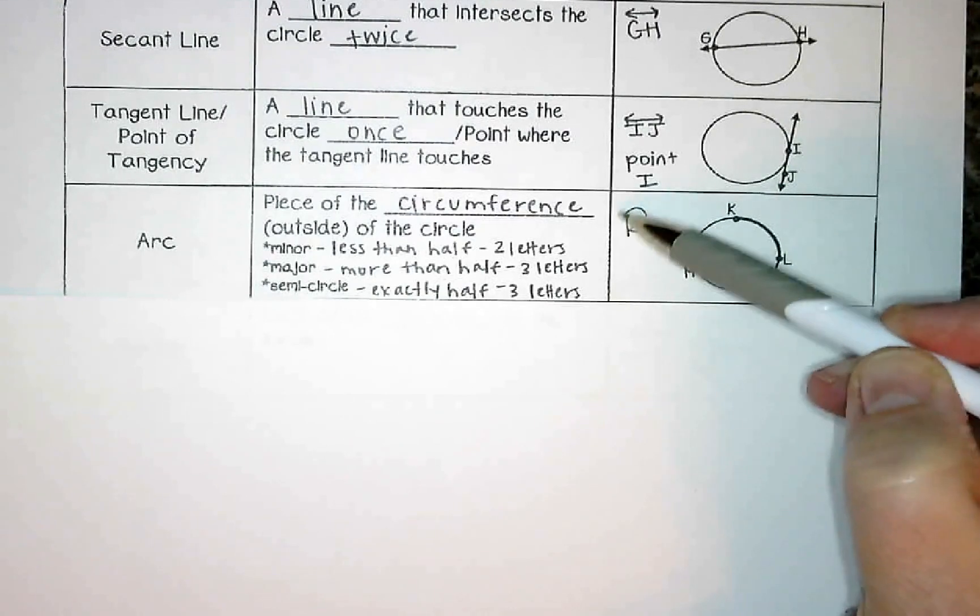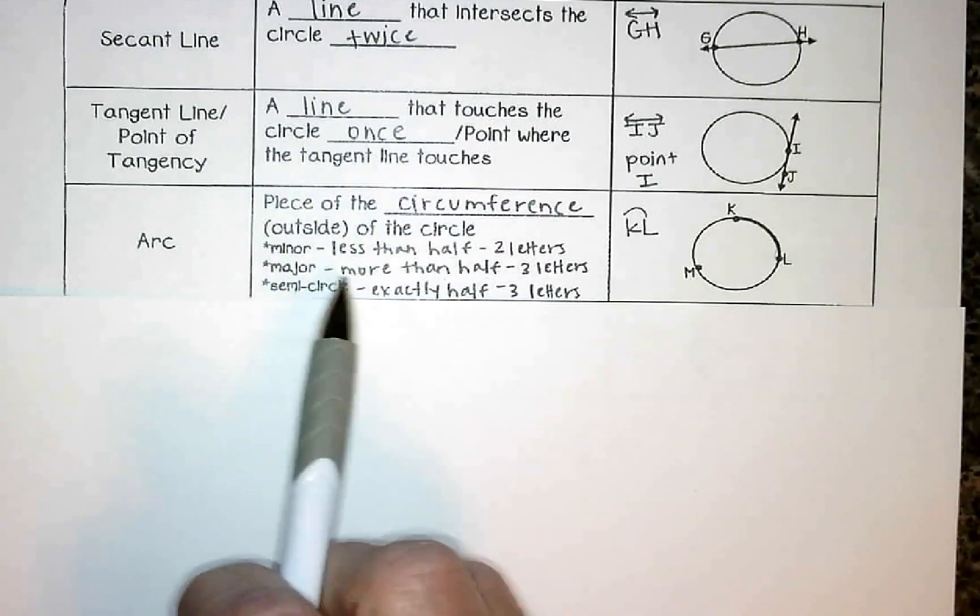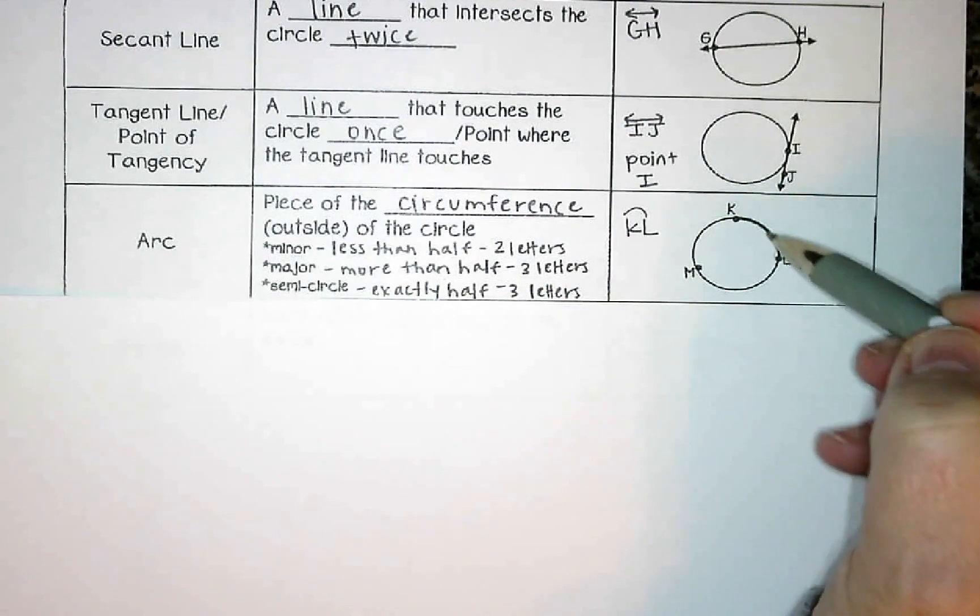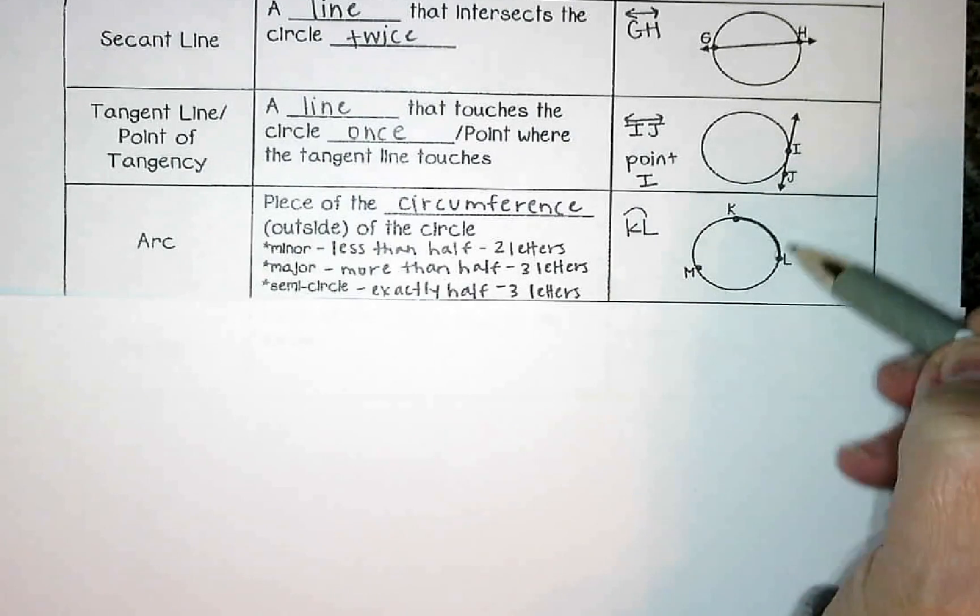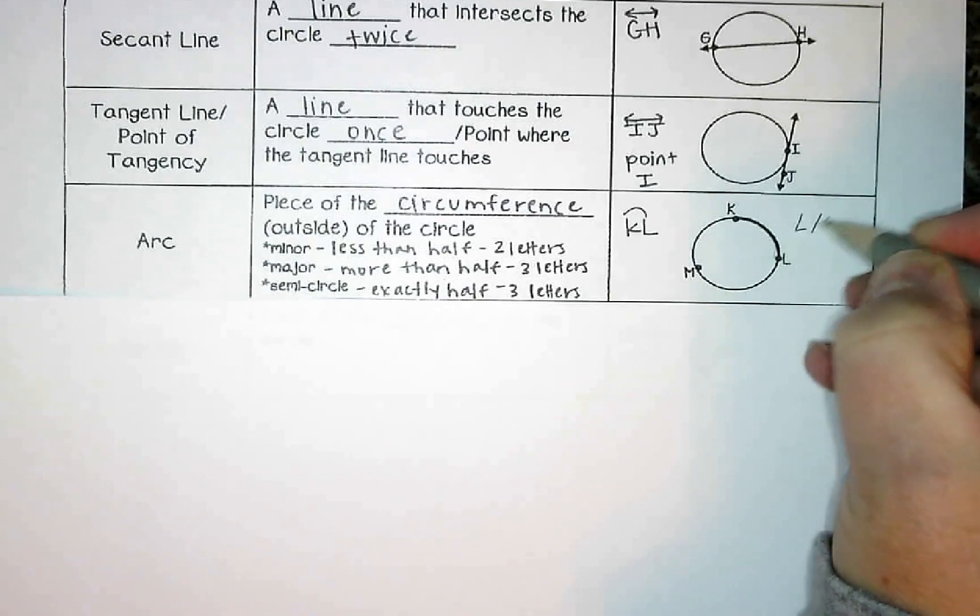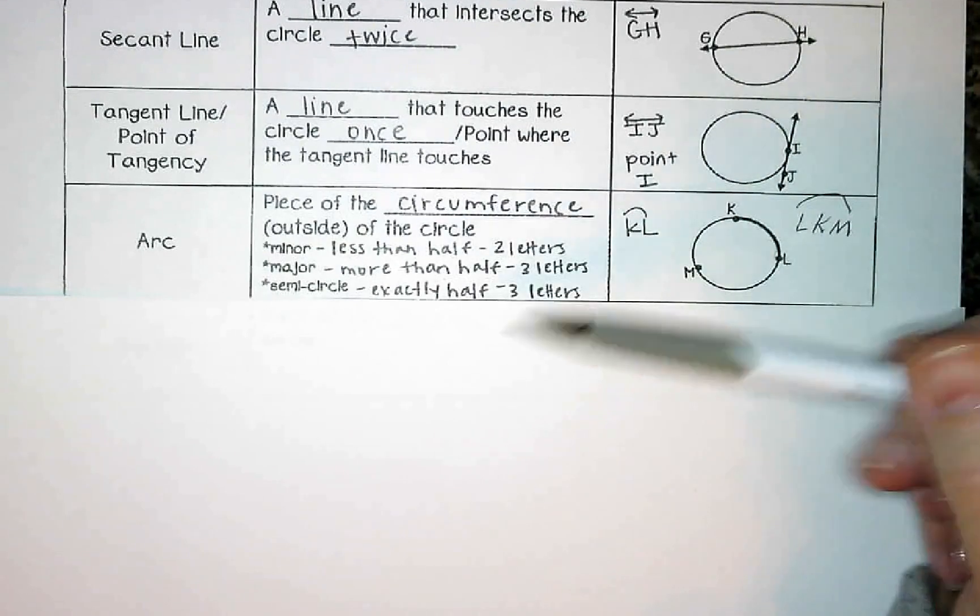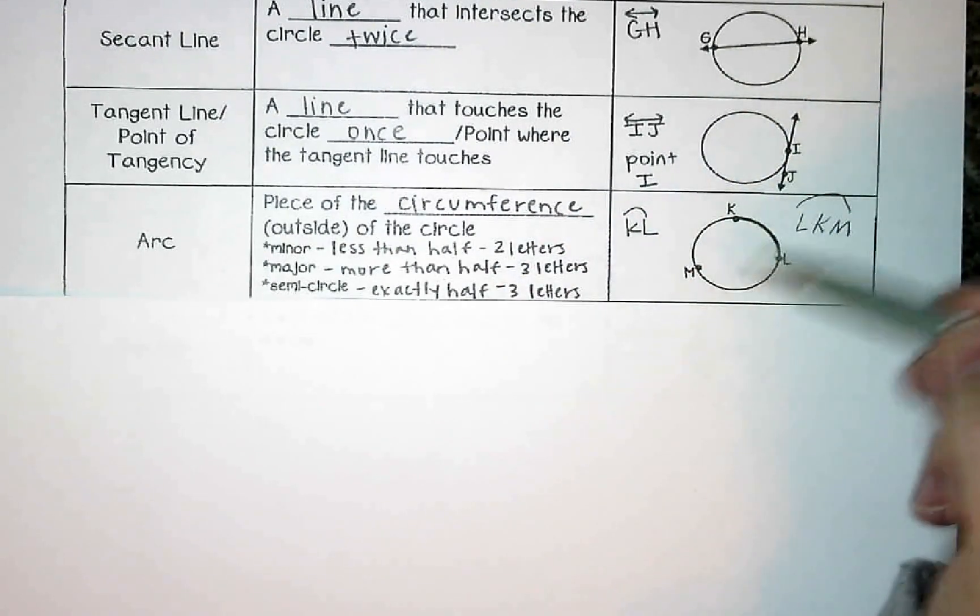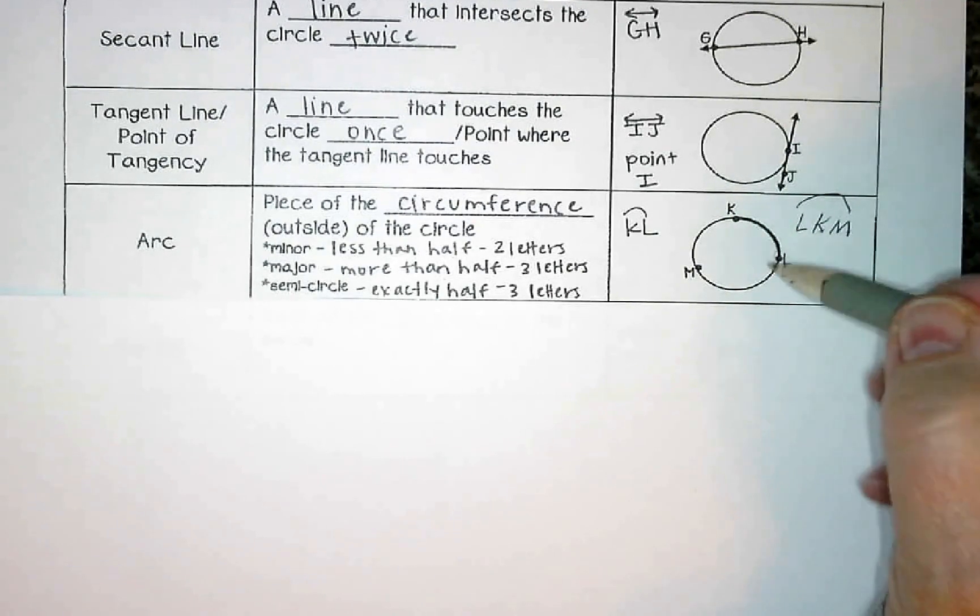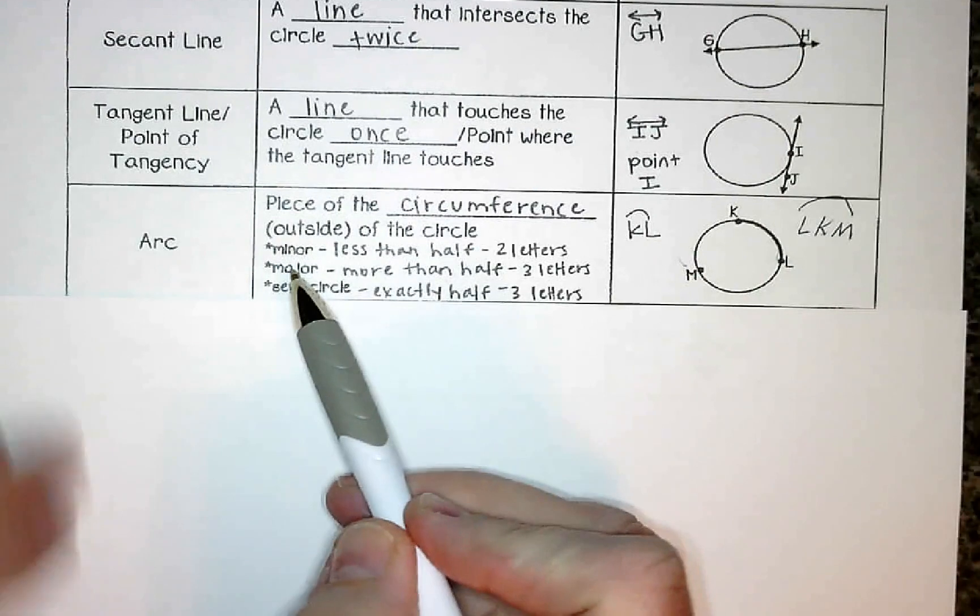A major arc is more than halfway. And we always label that one with three letters. So if I go from L through K and stop at M, that's a major arc. I'm going more than halfway around the circle. So we would label that one LKM with a little arc over the top. That's called a major arc, more than halfway. And a semicircle is exactly half. We don't have that on our picture, but we do label it again with three letters, depending on which way we would go around. That would be called a semicircle.